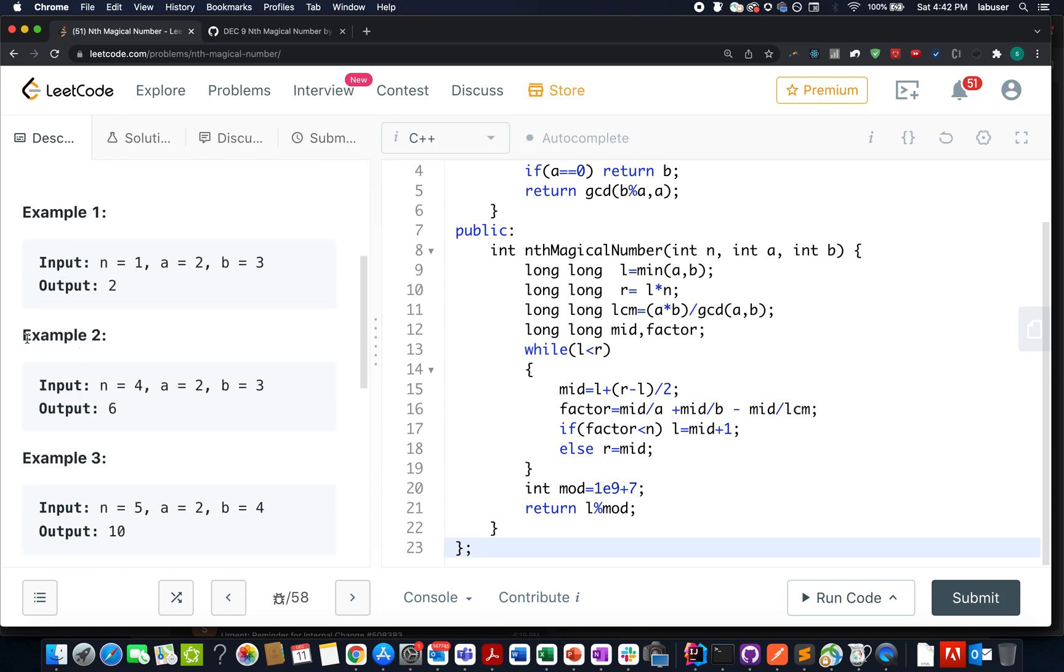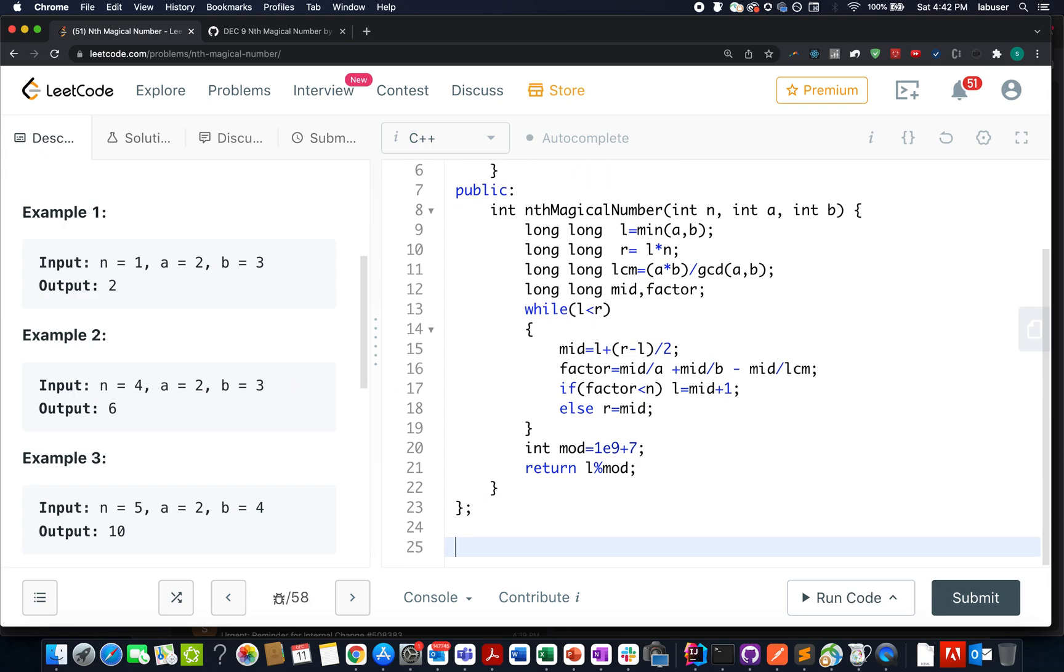Let's take example two where n is given as 4. That means we need to tell the fourth element in the series. a is given as 2, b is given as 3. If I create the series, the first element will be 2, the second element will be 3, the third element will be 4, the fourth element will be 6, the fifth element would be 8, the seventh element would be 9 and so on. Here we are looking for the fourth element, so we need to return 6 as the answer.